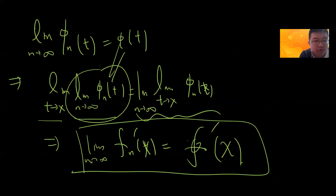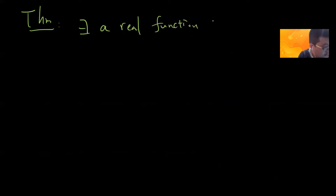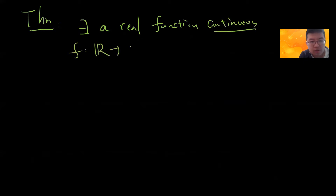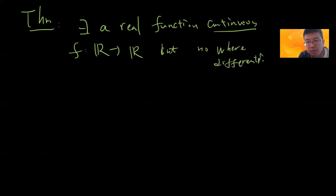So let's prove another interesting theorem. There exists a continuous real function from ℝ to ℝ that is nowhere differentiable — basically, you have a function which is continuous, but every single point is not differentiable. When I was an undergrad, my professor had some illustrated example which is not rigorous, but you can imagine a fractal-like construction.